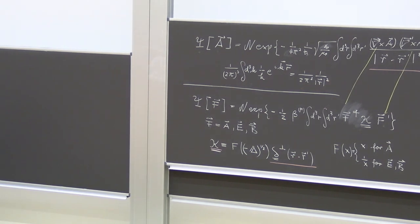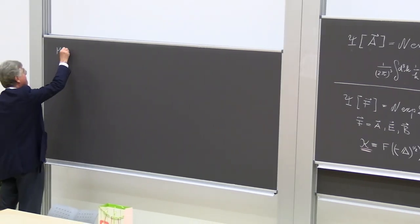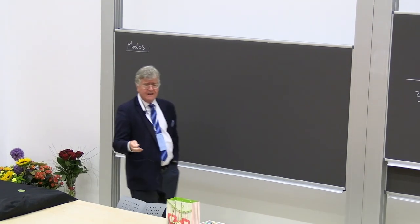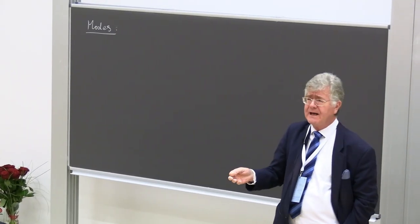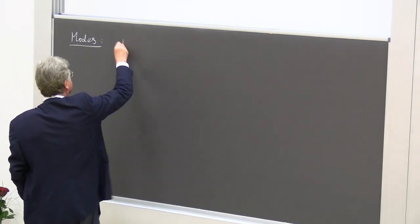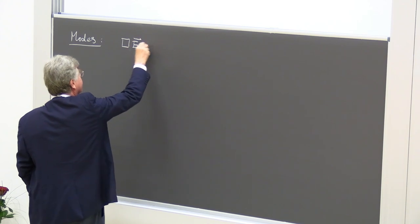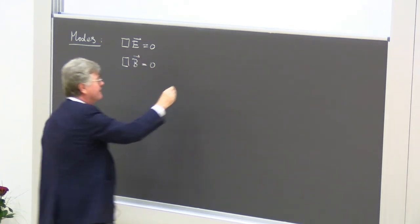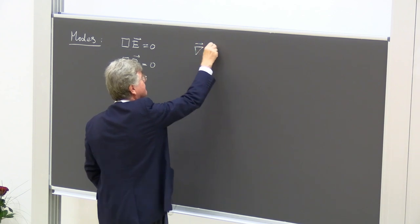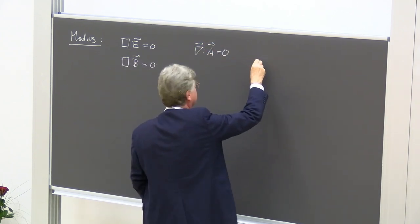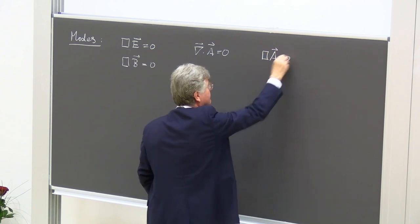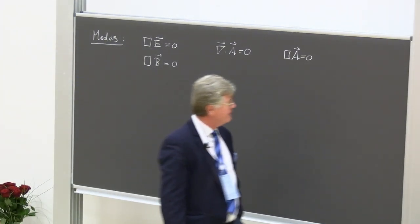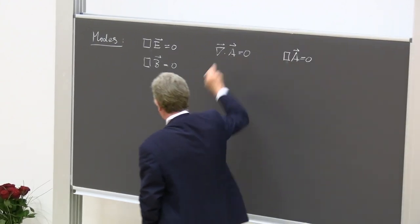So, let me go back and remind myself in your presence about modes. Now, if we talk about the vacuum in the absence of charges and in the absence of currents, then of course we have the wave equation for the electric field. We have the d'Alembert wave equation for the magnetic induction. And if we are in Coulomb gauge, then we are going to be having an equation for A equal to 0.